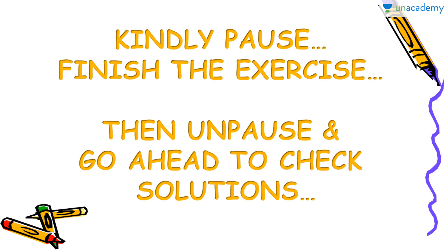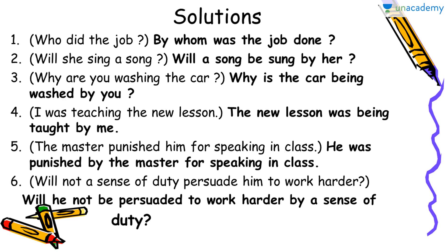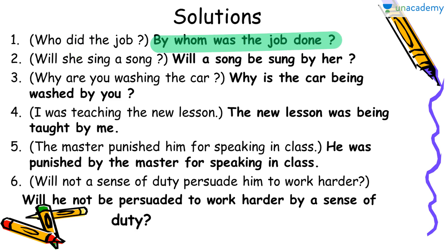Now let's come on to the solutions. The first sentence was: Who did the job? This is a sentence with no doer — we are asking a question to find who did the action. The word 'did' tells us this sentence is in simple past tense. It will be converted as: By whom was the job done?